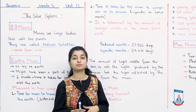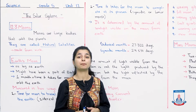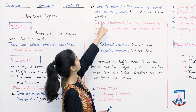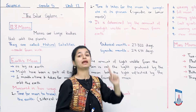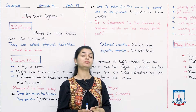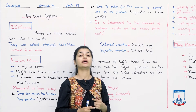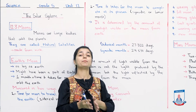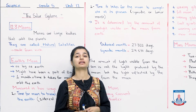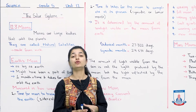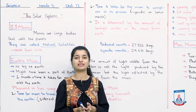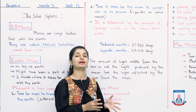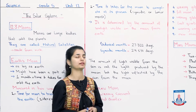There is also a second way, jisme hum measure karte hai ki jo ek month hai woh kitna lamba hai. Woh kya hai — time it takes for the moon to complete all its phases. Pehla tariqa tha ki hum dekhte hai moon ko kitni days lagte hai poora earth ke around jaane mein. Aur doosra tariqa kiya hai ki moon ko apne phases complete karne mein kitni days lagte hai. Moon ke different phases hote hai — full moon phase hota hai, new moon phase hota hai, waxing crescent phase hota hai.